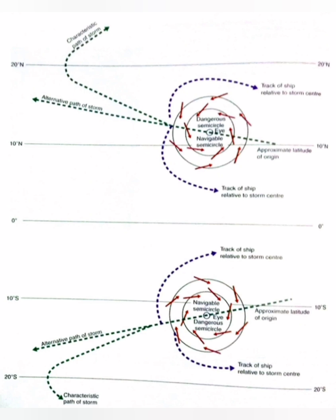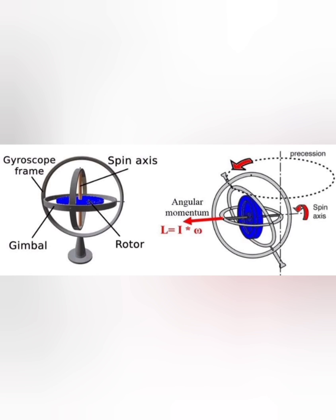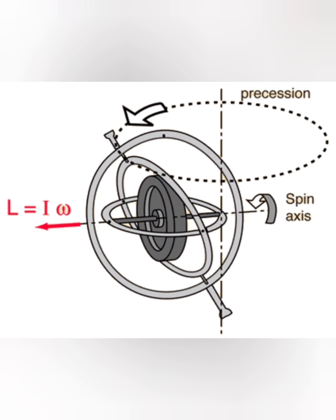The next step the cyclone takes is it moves towards the pole, and to explain that you have to understand gyroscopic precession. The gyro compass works on this principle — it is nothing but a freely rotating object which will always point in a certain direction. When a force is made to act on a gyroscope or a freely rotating object, it will deflect in a direction 90 degrees to that force, not in the direction of the force itself.